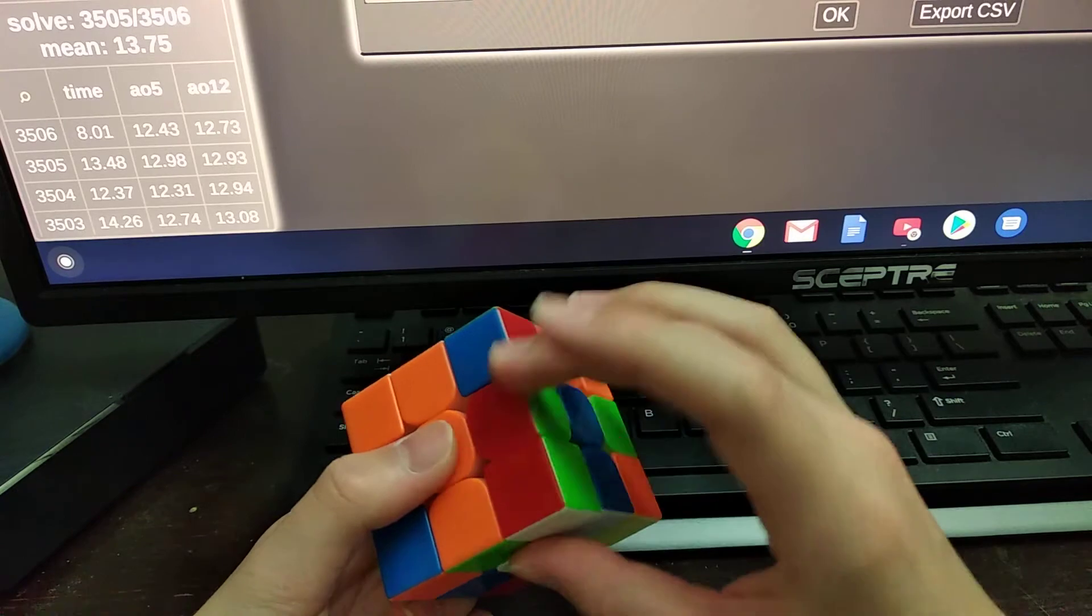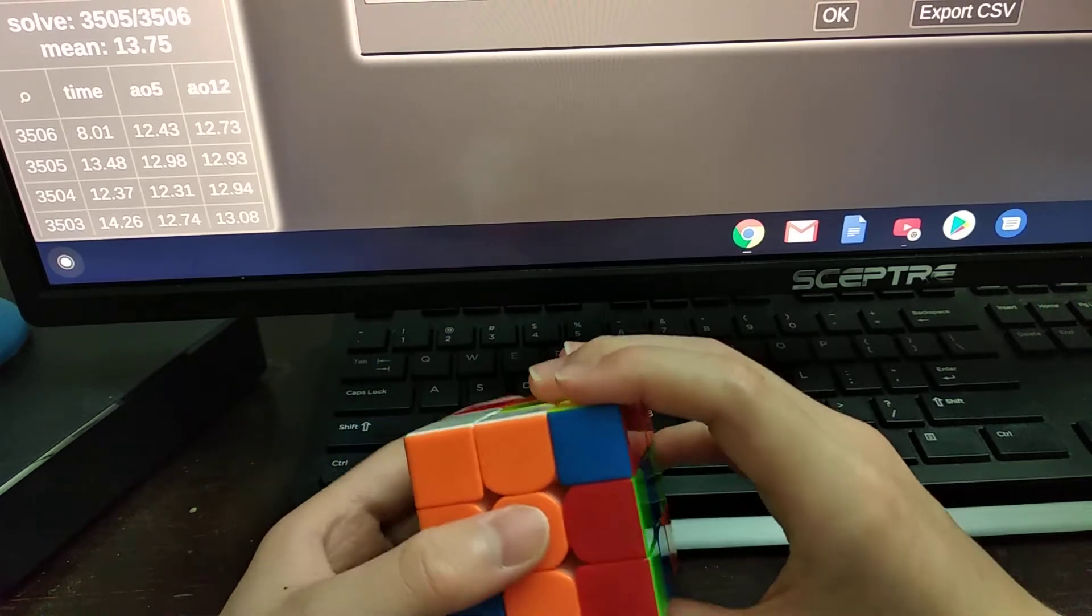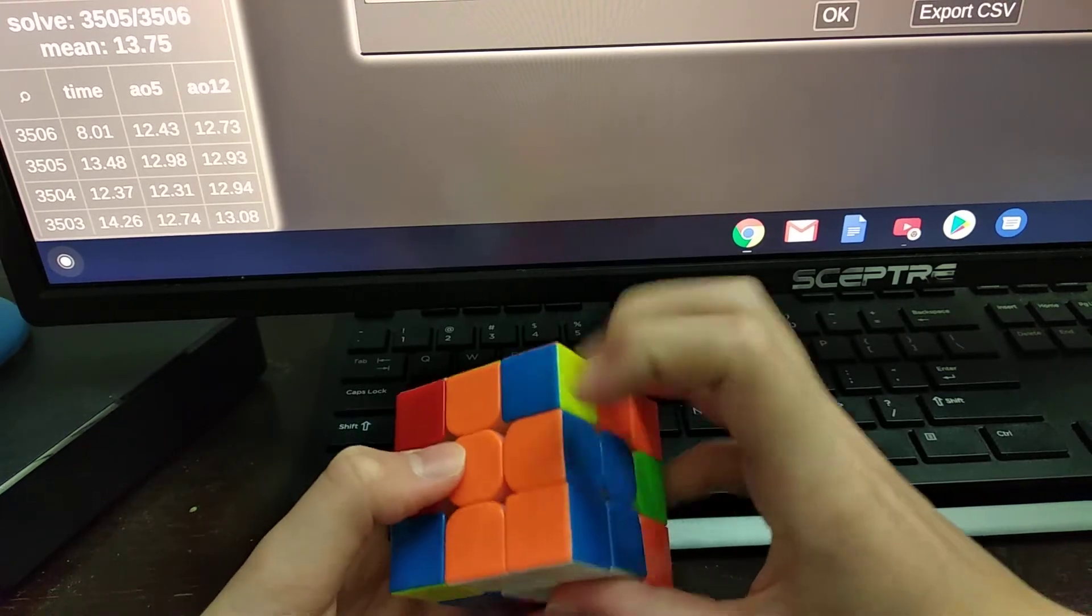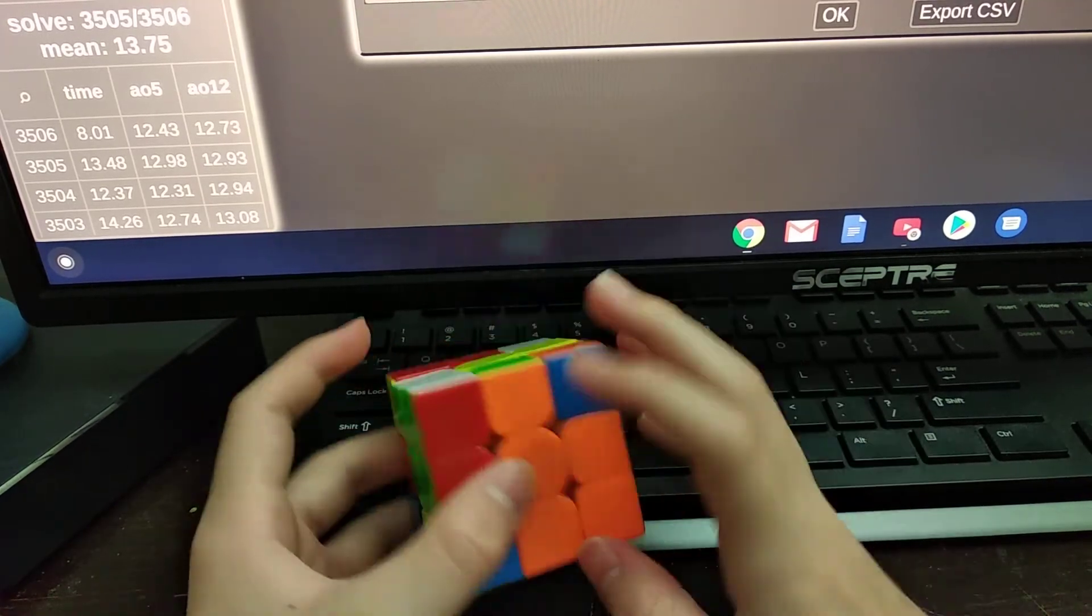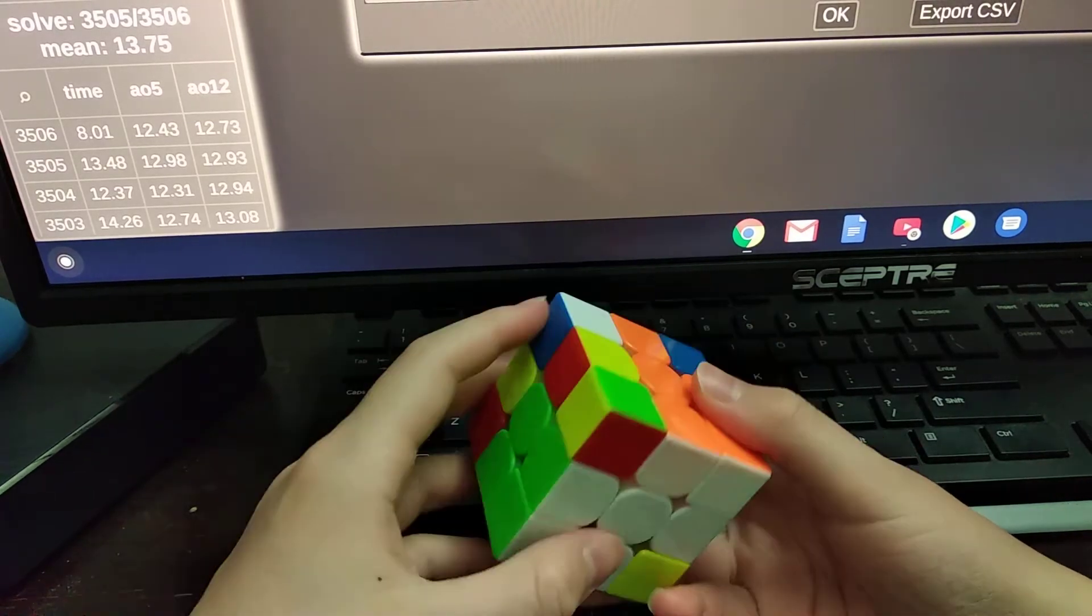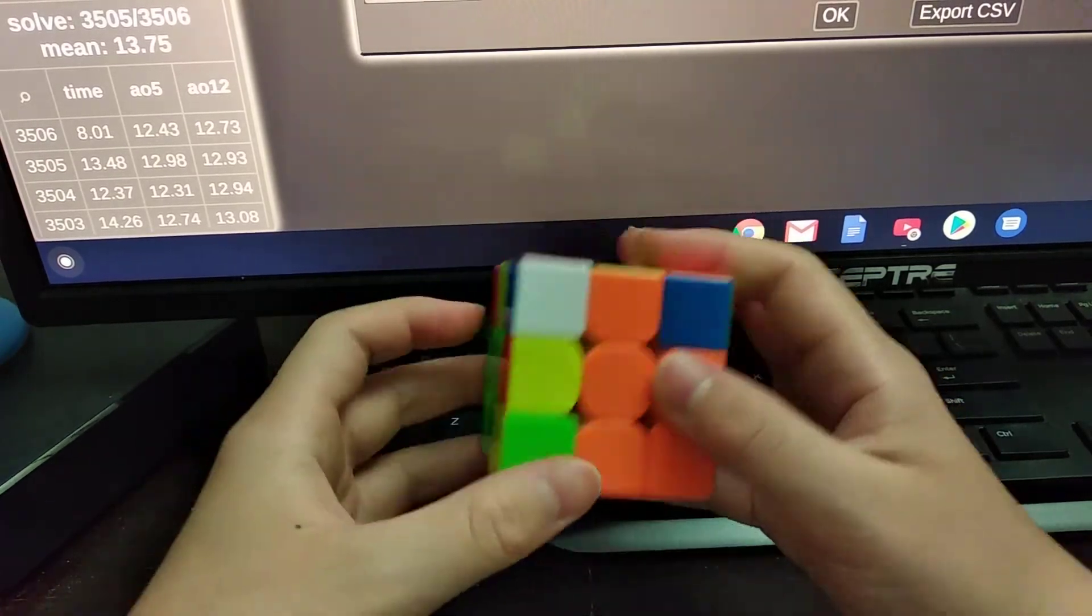And then this recreates this pair and matches it up again. Then F2 L2 would create a double X-cross, because F2 would make this big 2x2x2, and then that would make this block. And when you do the L2, you have another 2x2x2, so now we have a double X-cross.